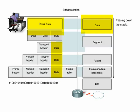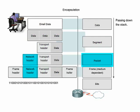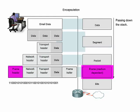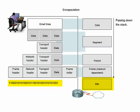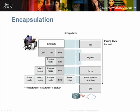Data is the term for a PDU at the application layer. The segment is a transport layer PDU. The packet occurs at the inter-network layer. Frames at the network access layer. And bits are PDUs when physically transmitting data over the medium. These terms will be important to know because network engineers use them to reference the layers of the network and in troubleshooting.